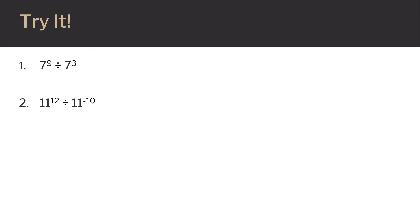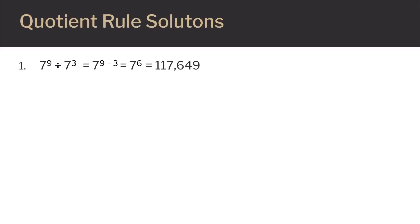Here are two examples for you to try. Hit pause on the video and then hit play when you're ready to go over the solutions. Here's the solution for the first problem: we have seven to the ninth power divided by seven to the third power. The bases are the same, so we can subtract the exponents. Nine minus three is six, so we have seven to the sixth power, or 117,649.